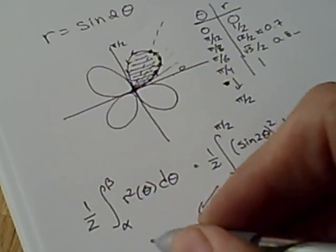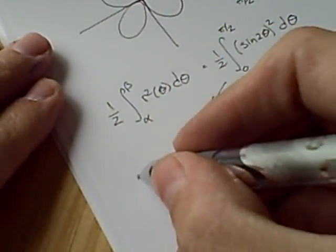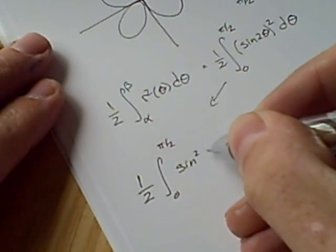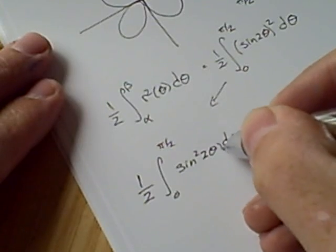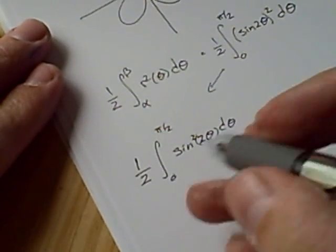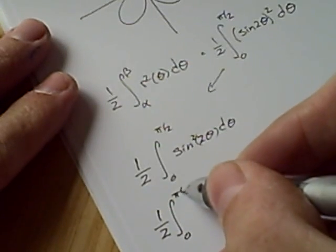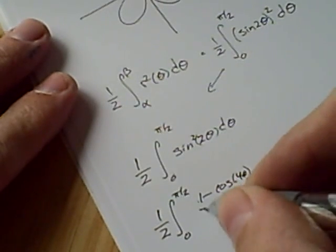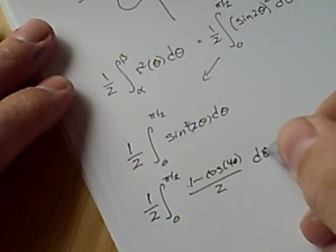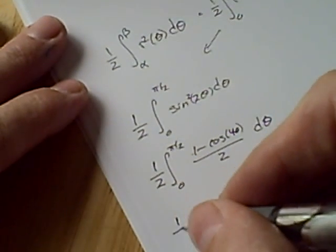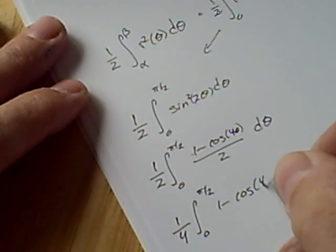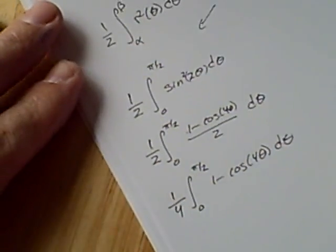Now integrating this, so what do we have? We have 1 half the integral from 0 to pi over 2. It's sine squared of 2 theta d theta. So we can use our double angle or reduction formula. I forget the names of these things. But this is going to be 1 minus cosine of 4 theta over 2 d theta. Pull the 2 out. We'll get a 1 quarter out front. And then we get a 1 minus cosine of 4 theta on the inside. Which is nice and easy to integrate.